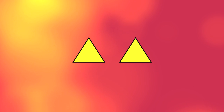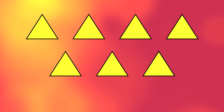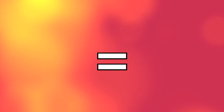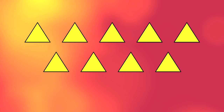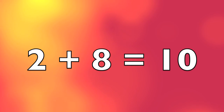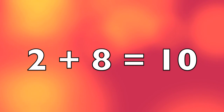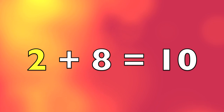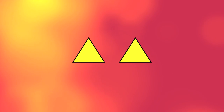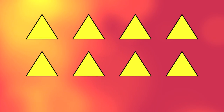2 triangles plus 7 triangles equals 9 triangles. 2 plus 8 equals 10. 2 triangles plus 8 triangles equals 10 triangles.